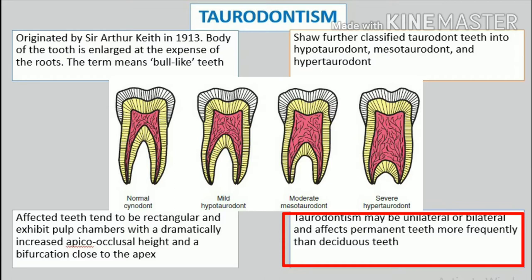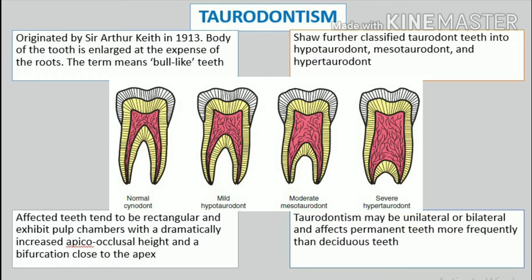Radiographic Features. The unusual nature of this condition is best visualized on the radiograph. Involved teeth frequently tend to be rectangular in shape rather than taper toward the roots. The pulp chamber is extremely large with a much greater apicoeclusal height than normal. In addition, the pulp lacks the usual constriction at the cervical of the tooth and the roots are exceedingly short.